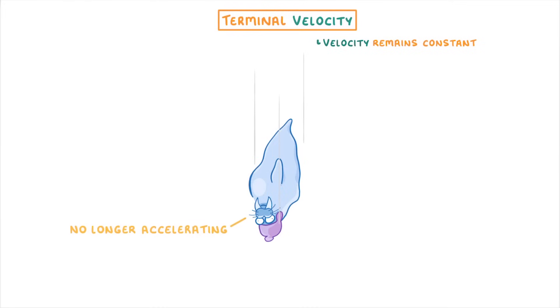In today's video, we're going to look at why falling objects reach a terminal velocity, which is where their velocity remains constant, so they're no longer accelerating or decelerating.